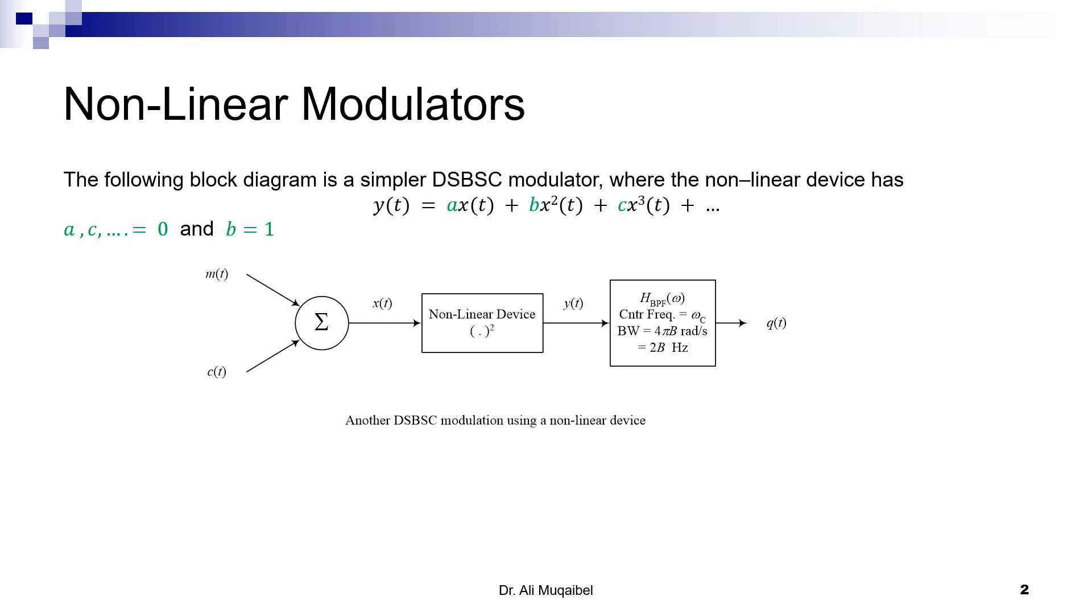Non-linear modulators: Here is a simple example where we just take the second term. So, focusing on this term, we're saying that this non-linear device is basically a squarer. Now, if the input is the message M(t) and we have C(t) the carrier, they go through summation, and